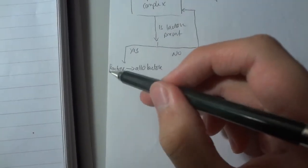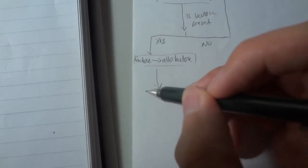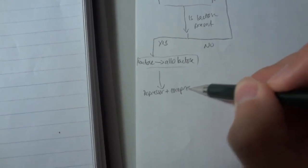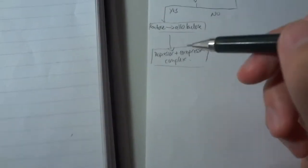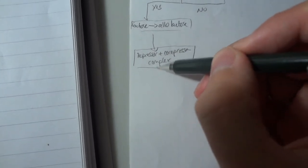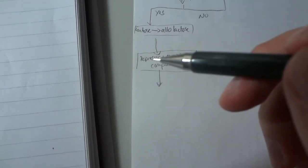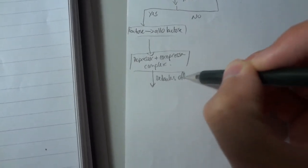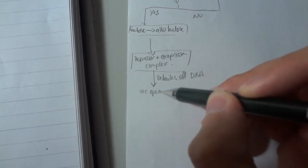And allolactose is a co-repressor. It binds onto the repressor, forming a repressor plus co-repressor complex. And this complex, the co-repressor changes the shape of the repressor and causes it to detach off the DNA molecule, which then allows RNA polymerase to stick onto the DNA and do transcription. So now the lac operon is expressed.